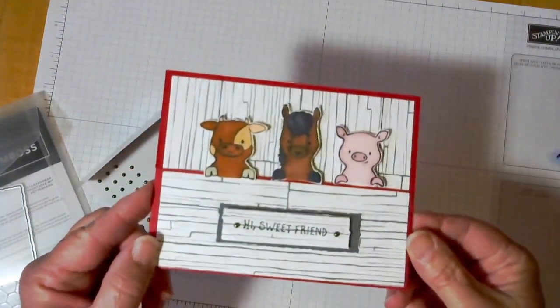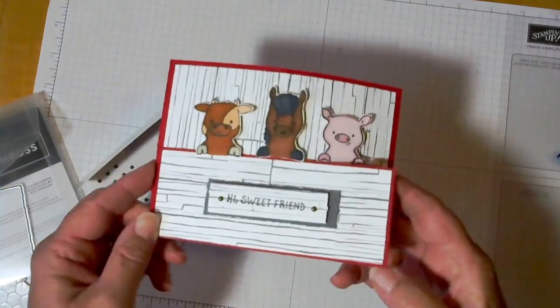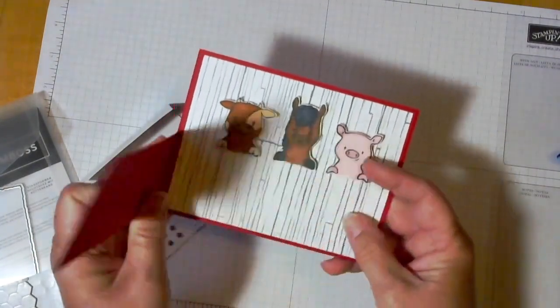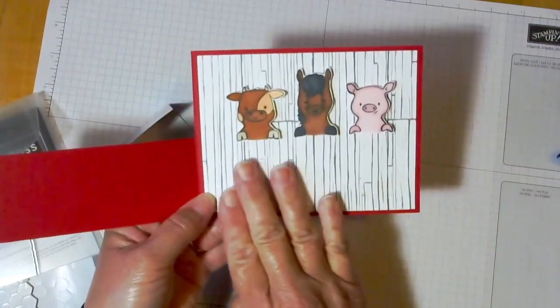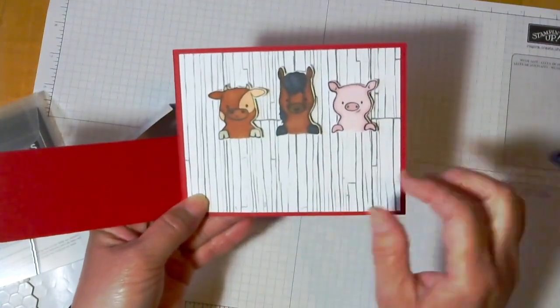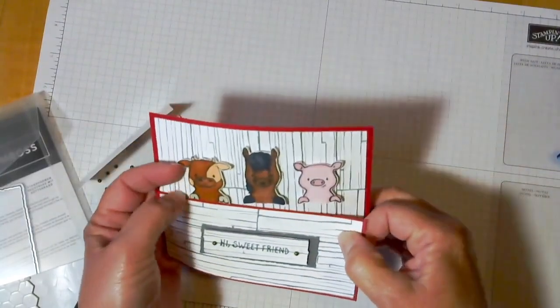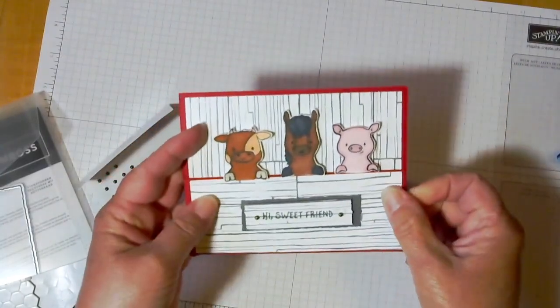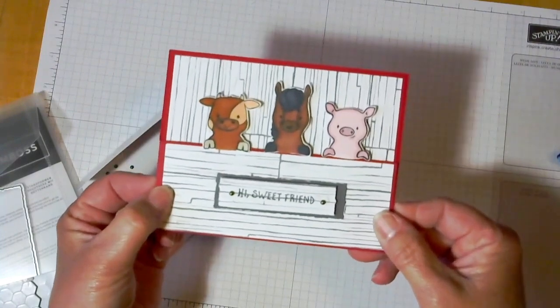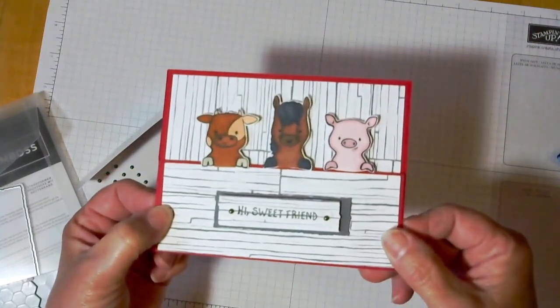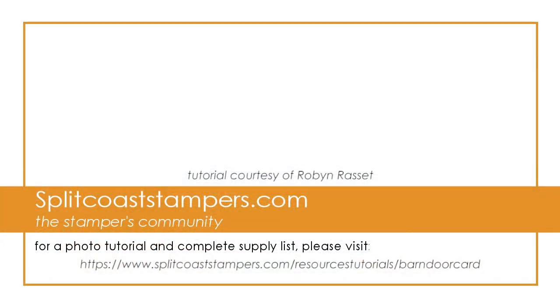And there is our cute barn door card. And it'll open. Like I said if you want you can do a white greeting here. It kind of depends on what your boards look like. And it'll just close by tucking under its feet. And there we go. Hope you have fun making this card. Thanks for stopping by at the roost.